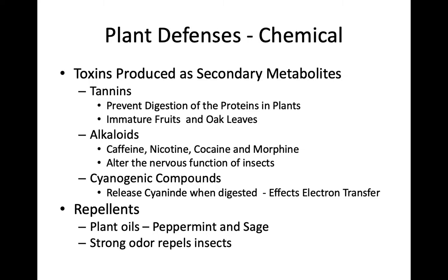Most plants have more than just a physical defense — some also have a chemical defense. Chemicals that are produced by a plant but that are not required for the growth of the plant are called secondary metabolites. These are produced through side pathways of normal metabolism that plants take advantage of to protect themselves from herbivores — that's why they're called secondary metabolites, they're produced in chemical pathways that are offshoots of normal metabolism.